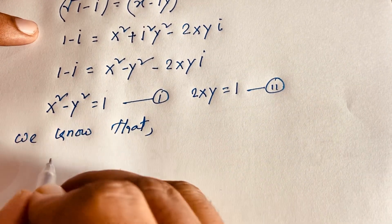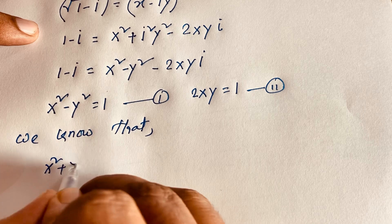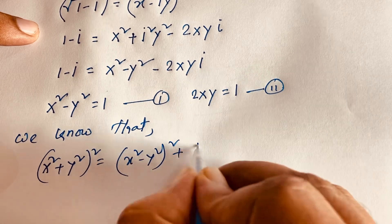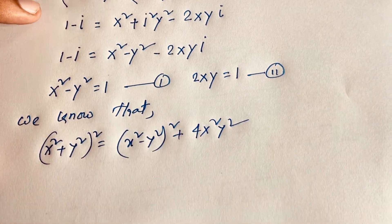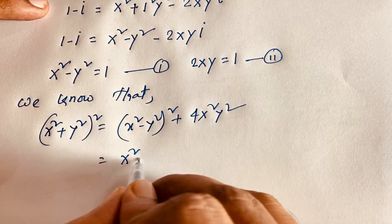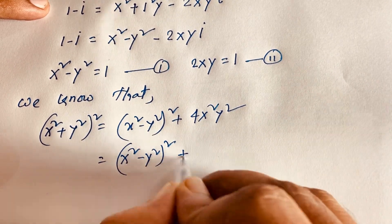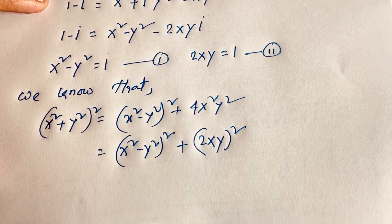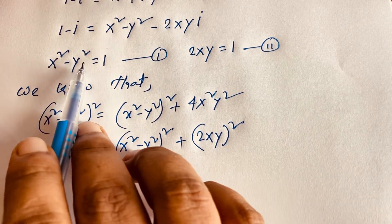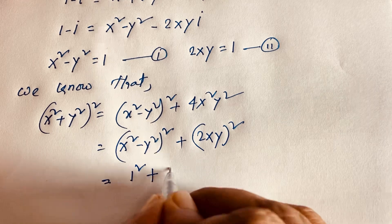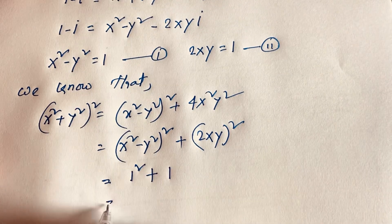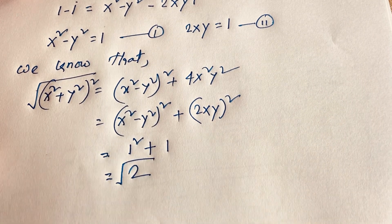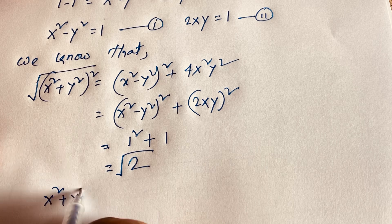We know x² minus y² equals 1. To find x² plus y², we use: (x² plus y²)² equals (x² minus y²)² plus (2xy)² equals 1² plus 1² equals 2. Taking the square root, x² plus y² equals √2.